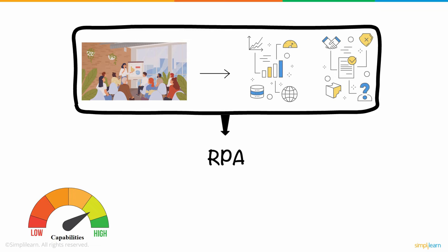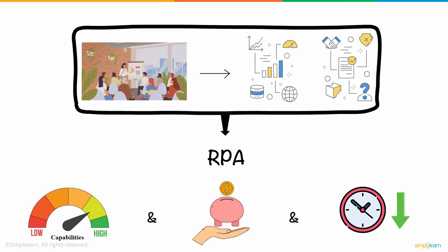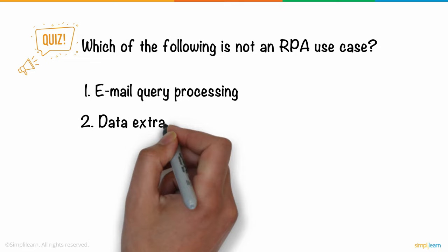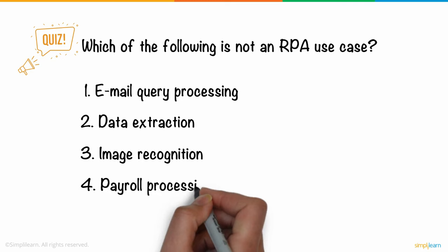Now that we've discussed what RPA is and isn't, here's a question for you. Which of the following is not an RPA use case? 1. Email query processing, 2. Data extraction, 3. Image recognition, 4. Payroll processing. Give it a thought and leave your answers in the comment section below.